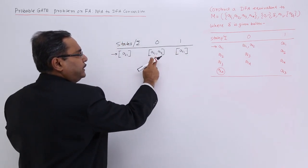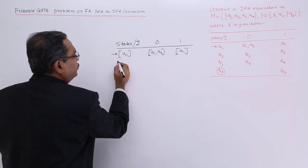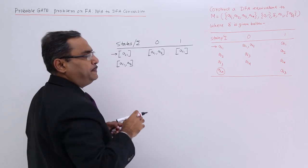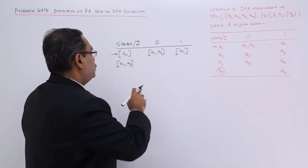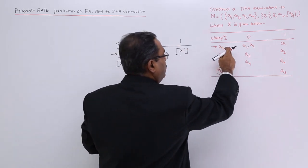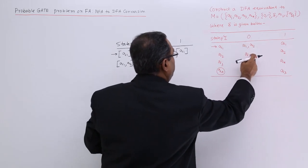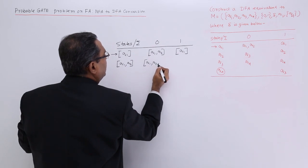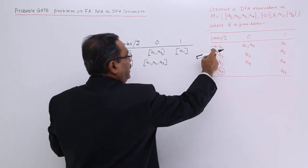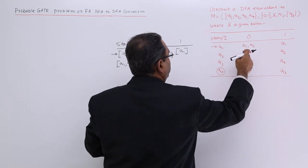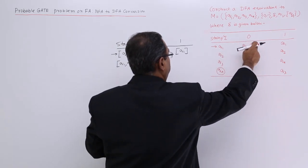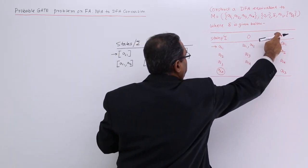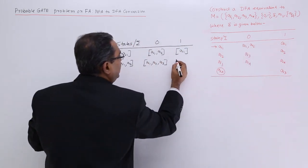Here I am getting one new state, that is {q1, q2}, so I should mark it. Marking means I should create a row for that so I can write its respective transitions. {q1, q2} is known as a single state, included within brackets. For input 1, I will be getting q1. So I am getting {q1, q2} for input 1 as well.